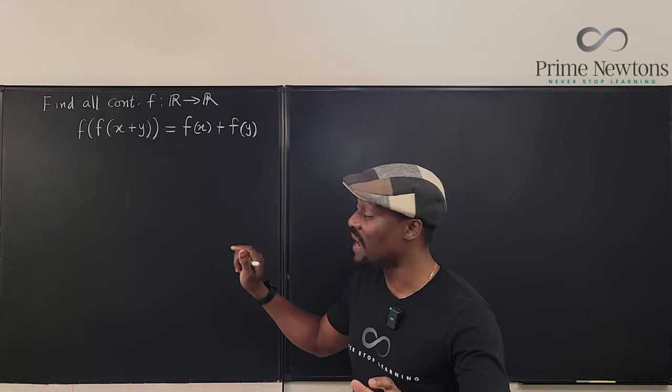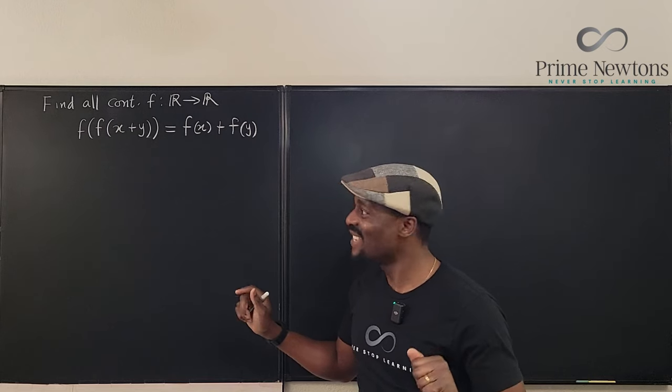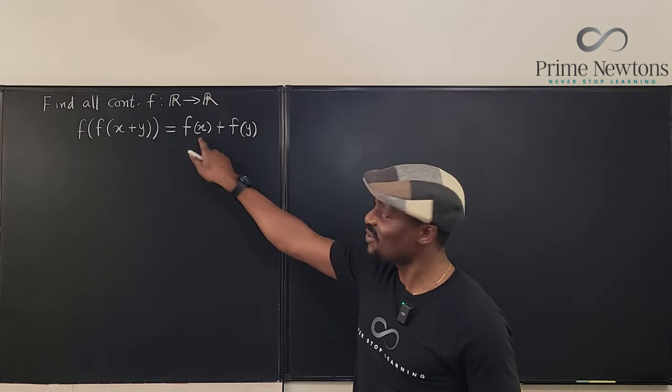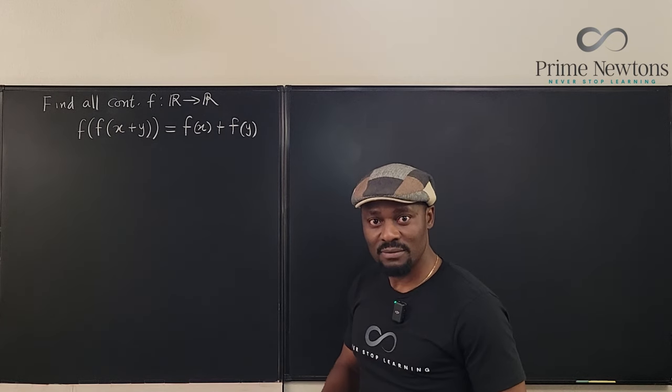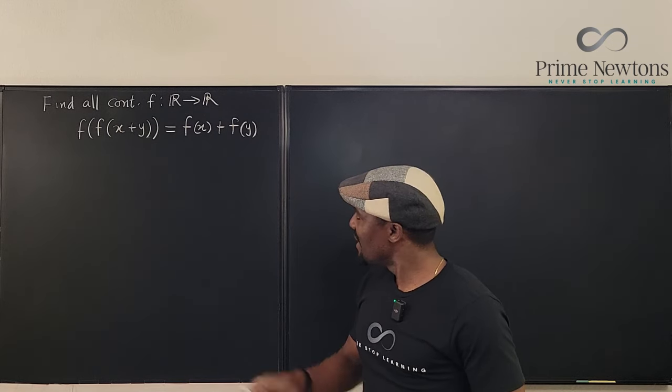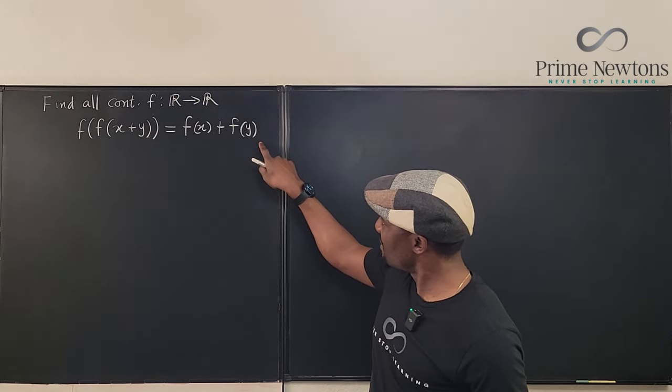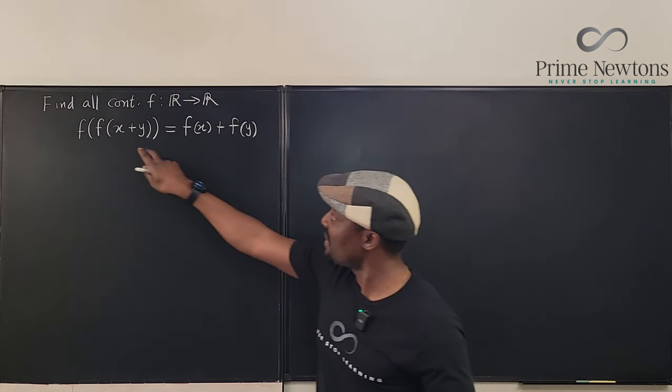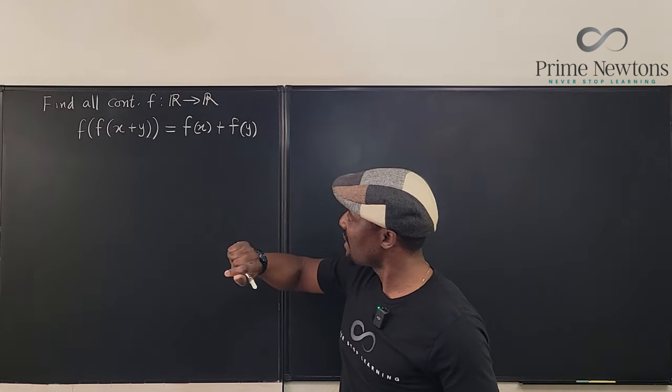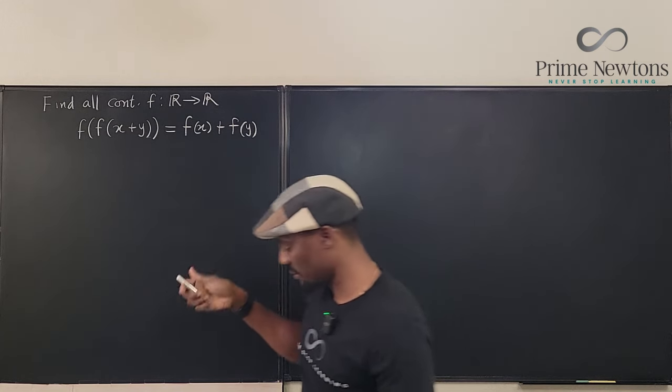Remember, our focus is to find f of x. So I can see f of x here. So how can I get rid of this guy? Well, just make it zero. But it doesn't look like I can make this zero. I can only make it f of zero. But at least on this side, I'm going to get f of f of x. Let's start with that.